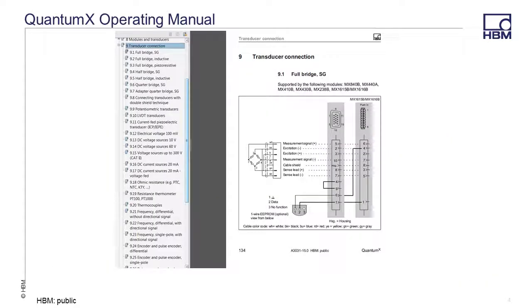Chapter 9 in the QuantumX operating manual has all the wiring schematics organized by sensor type. You can see here on the left side, Chapter 9, that each sensor type has its own section and it includes the wiring for any QuantumX module that supports that sensor type.